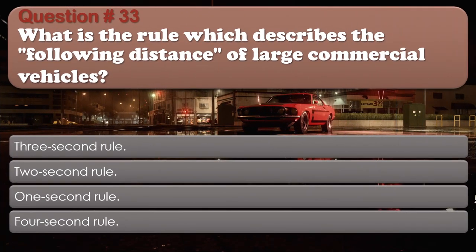Question number 33. What is the rule which describes the following distance of large commercial vehicles? Three-second rule. Two-second rule. One-second rule. Four-second rule. The correct answer is: Four-second rule.